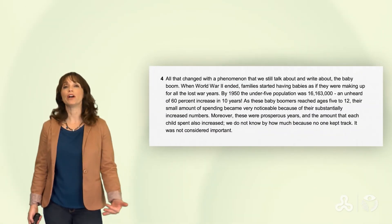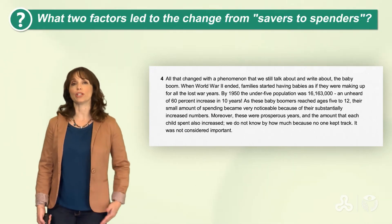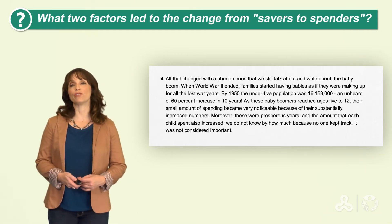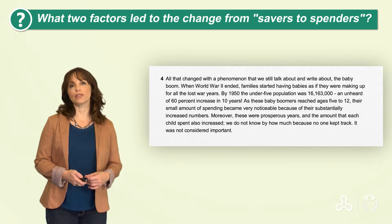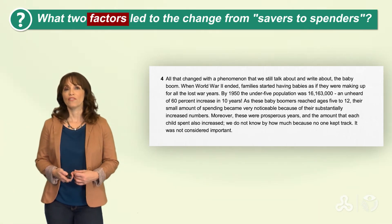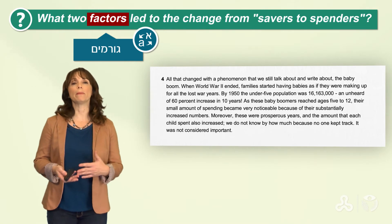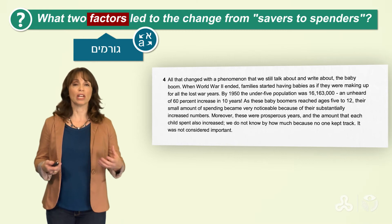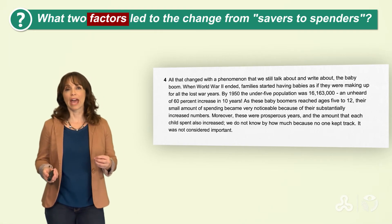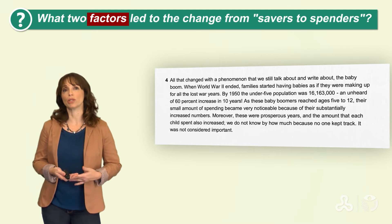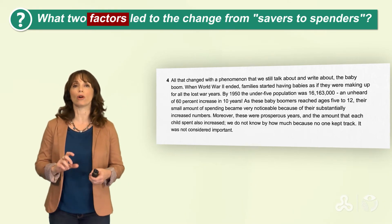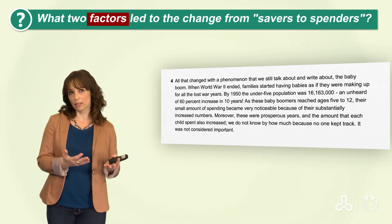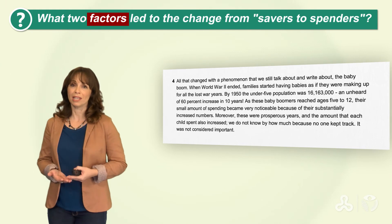Let's read paragraph four and focus on the following question: what two factors led to the change from savers to spenders? Let's focus on the word 'factors' — factors means גורמים, causes. Sometimes people get confused with the word 'fact' (עובדה) versus 'factors' (גורמים) — these are two completely different things. We're looking for the two reasons, the two factors that caused the transition from children who save to children who spend money.